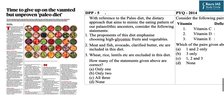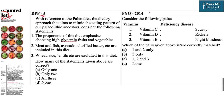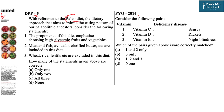DPP question number five is in relation to the paleo diet, from today's The Hindu Delhi edition. The topic compares important nutritional and dietary habits of today's population with those of people in the Stone Age. A reference question is taken from the biology section. The question says: with reference to the paleo diet — the dietary approach that aims to mimic the eating pattern of our paleolithic ancestors — consider the following statements.